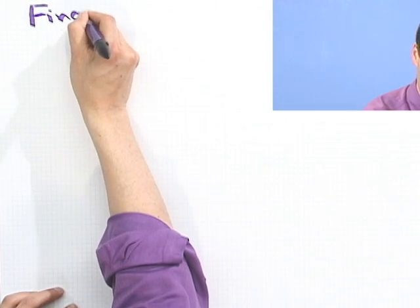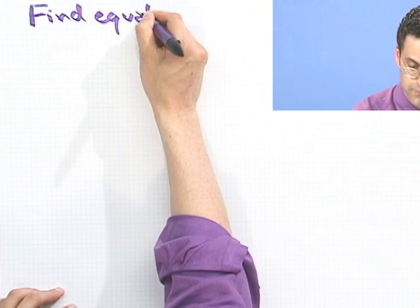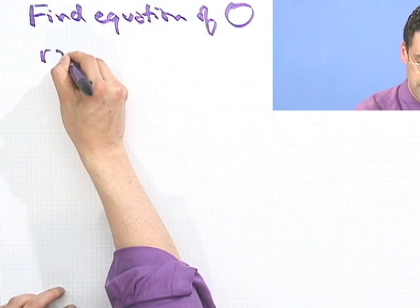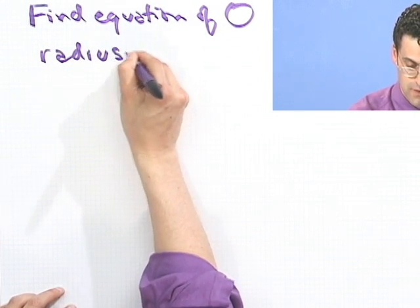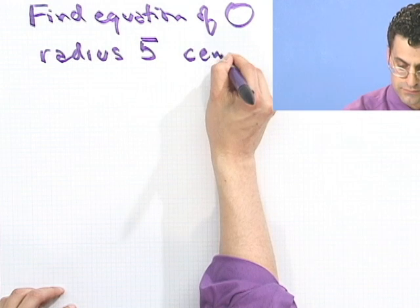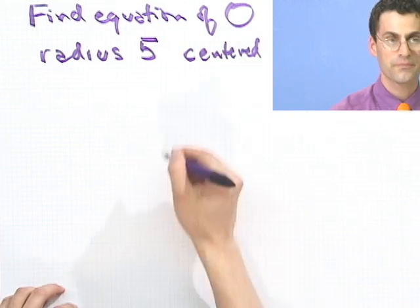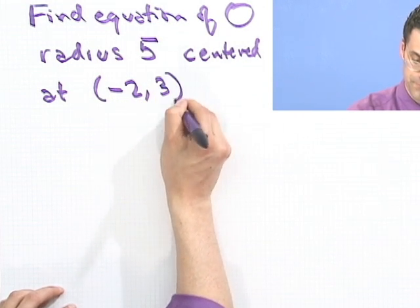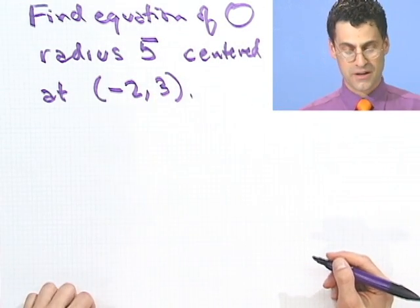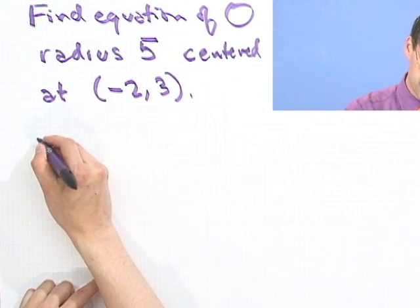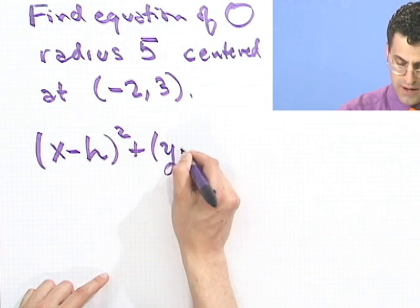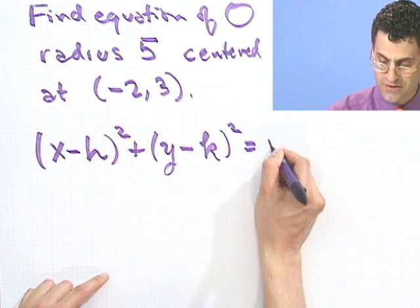For example, let's find the equation of the circle. So find the equation of the circle that has radius 5 and centered at the point (-2, 3). Well, let's think about how that would go.